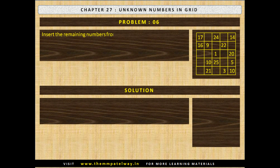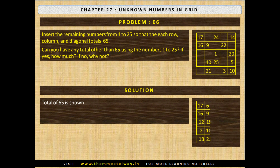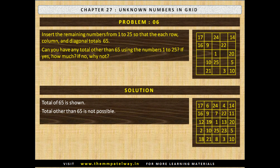Problem 6. Insert the remaining numbers from 1 to 25 so that each row, column and diagonal totals to 65. Can you have any total other than 65 using the numbers 1 to 25? The solution is shown. A total of 65 is shown; a total other than 65 is not possible. Reason: the sum of 1 through 25 divided by 5 gives us 65, and therefore we cannot have any other answer.